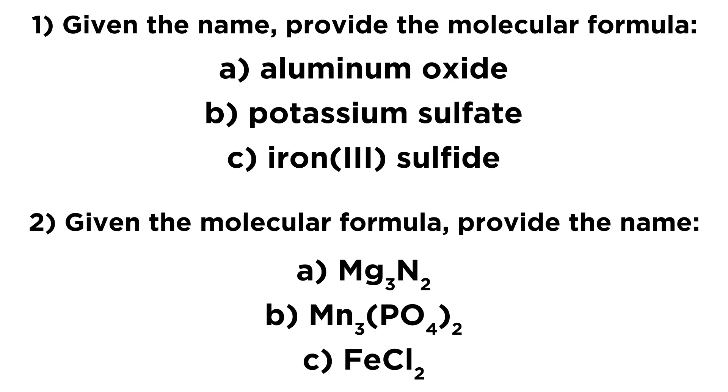Then, given the molecular formula, we want to provide the name. So we have Mg3N2, Mn3(PO4)2, and FeCl2. So if you're not sure how to approach this, go ahead and check out my tutorial on naming ionic compounds. That'll tell you everything you need to know. And when you're ready, give these a try.